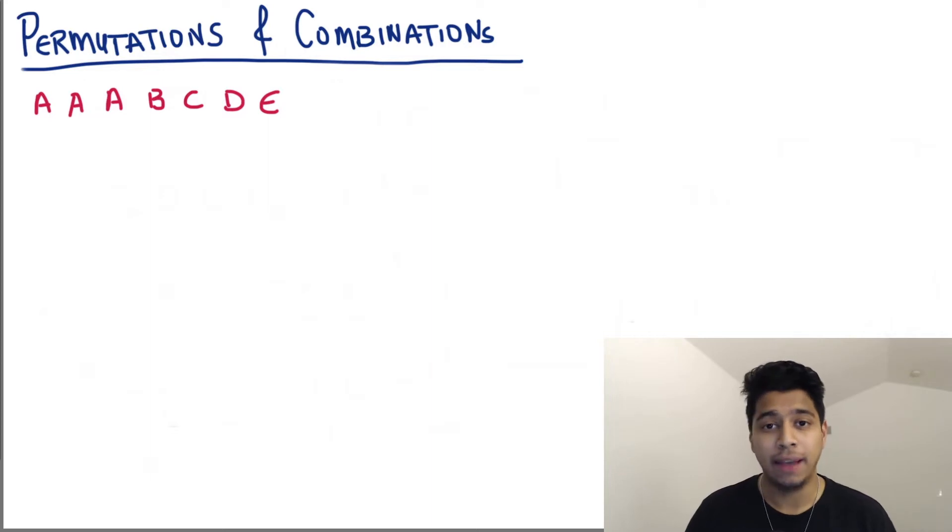Alright, so now your friend comes and gives you another A and tells you, okay now I've given you three A's, a B, a C, a D and an E. Find out all the possible ways you could arrange them. Before he leaves, you ask wait up, is there any other condition that you want me to fulfill? And he's like, ah, good thing you reminded me. I want C and D to be together always in all your arrangements.